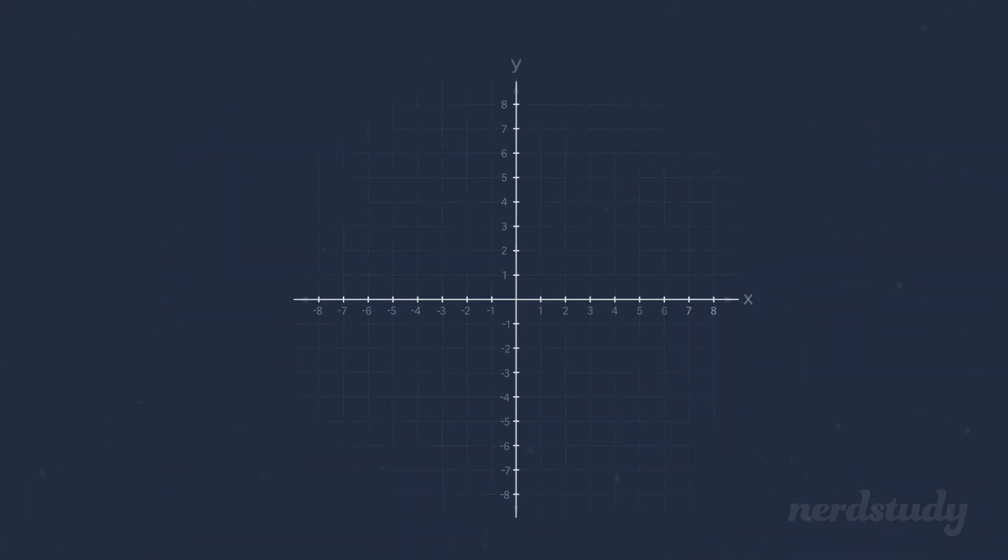So what do we mean by y-intercept? Well, the y-intercept is the place in which the line will intersect the y-axis. Remember, the y-axis is at a place where x equals 0. So in a graph like this one, when x equals 0, y equals 3, making our y-intercept equal to 3.